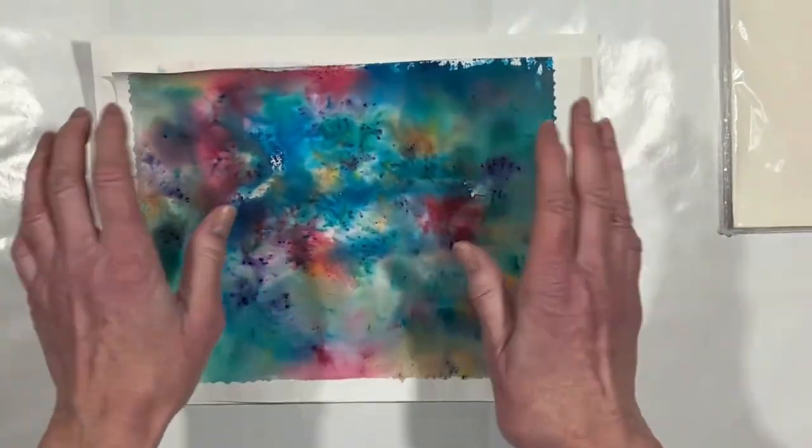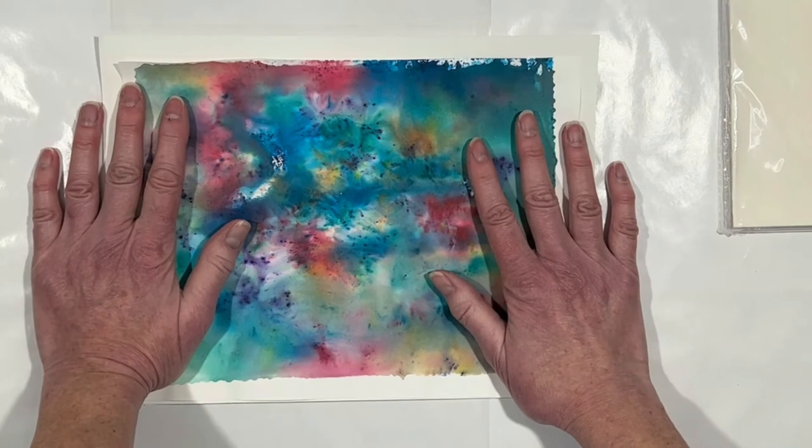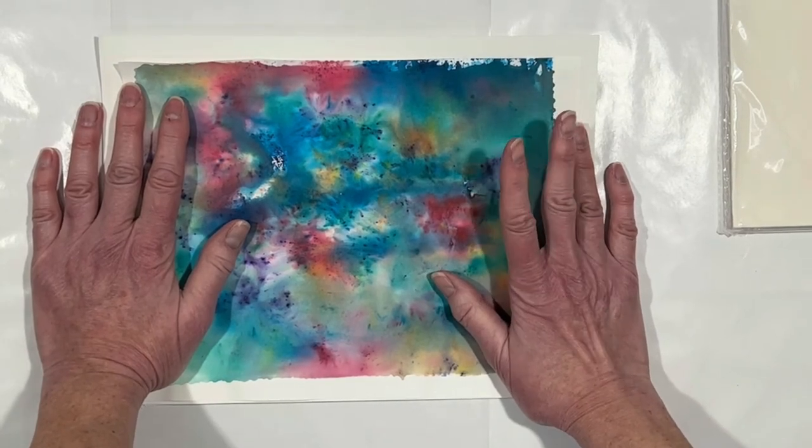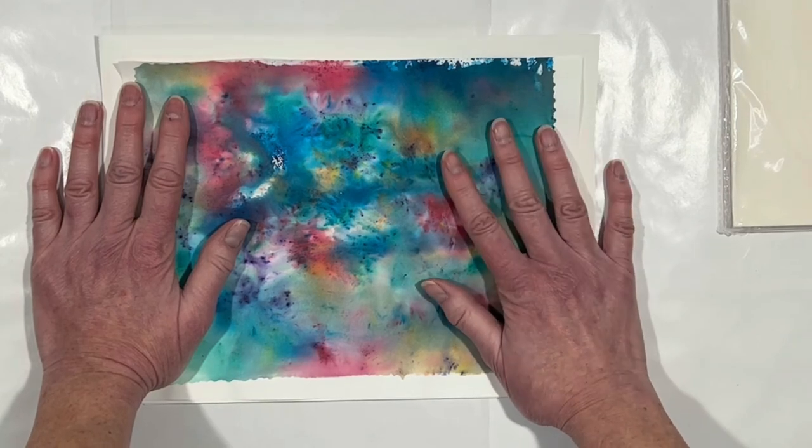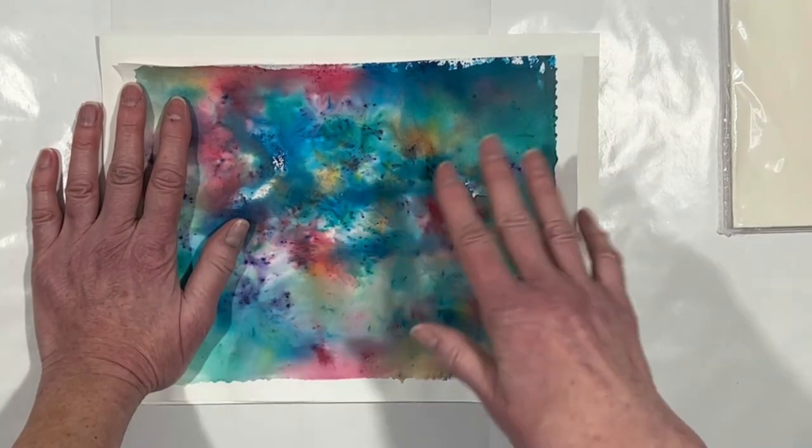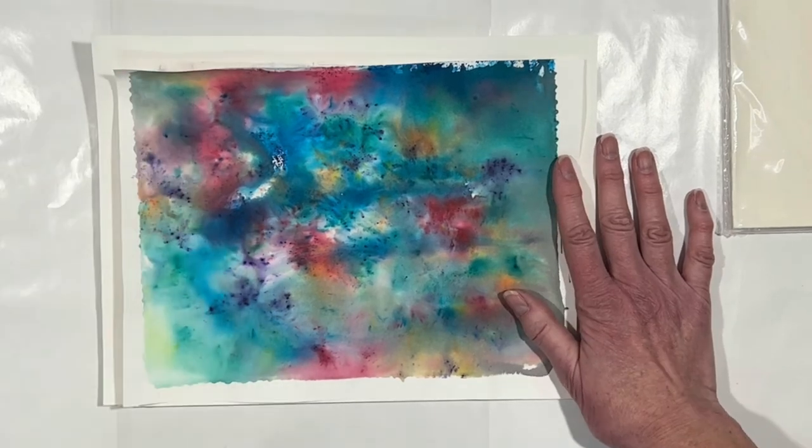Alright, so this is where we are. This is where we're going to end. Next paper video, which isn't necessarily the next video, but the next time we do paper, I am going to dye some paper with coffee and some other paper with avocado. Look forward to that. Stay safe, everyone. I'll see you in the next video.